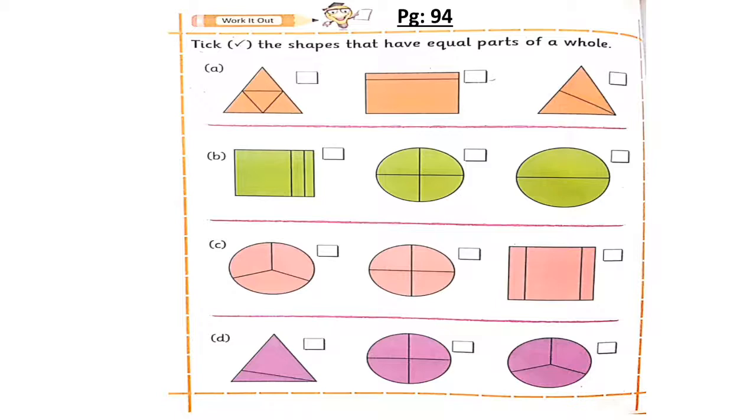Can you tell me in first row which figure shows equal parts? Yes, very nice. It's first and third. And in the next row it's second and third.